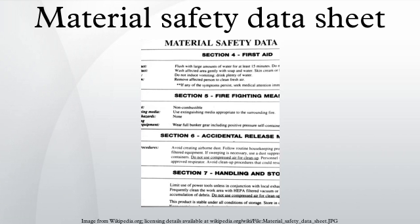There is also a duty to properly label substances on the basis of physicochemical, health and/or environmental risk. Labels can include hazard symbols such as the European Union standard black diagonal cross on an orange background, used to denote a harmful substance.